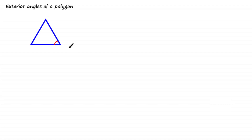Welcome to this tutorial. In the last tutorial we looked at interior angles and we saw how the sum of interior angles are related to the number of sides of the respective polygon. In this tutorial we'll be looking at exterior angles and seeing the relationship between the sum of exterior angles and the sides of a polygon.